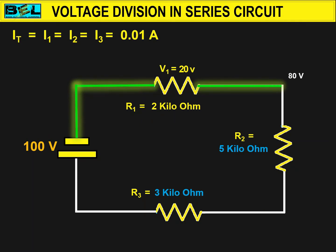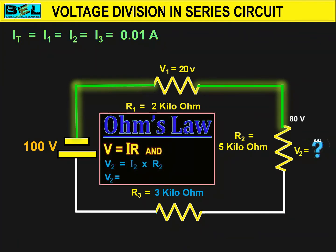Now 80 volts are available at resistor R2. We will find out how many volts will be dropped by R2 resistor with the help of Ohm's law. To find out V2 voltage, we take I1 current from the above equation, that is 0.01 Ampere, and the value of resistor R2 from the circuit, that is 5 Kilo ohms. By multiplying 0.01 Ampere with 5 Kilo ohm resistor, we get 50 volts. So V2 is 50 volts.